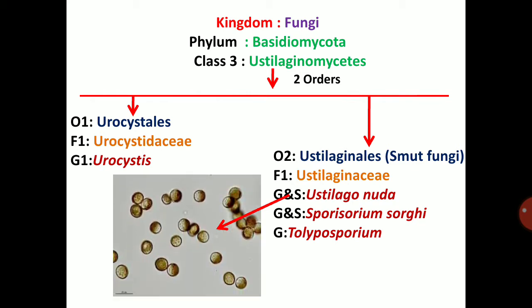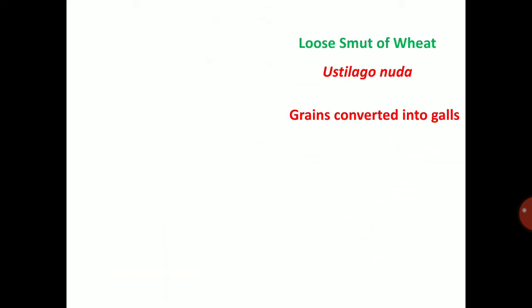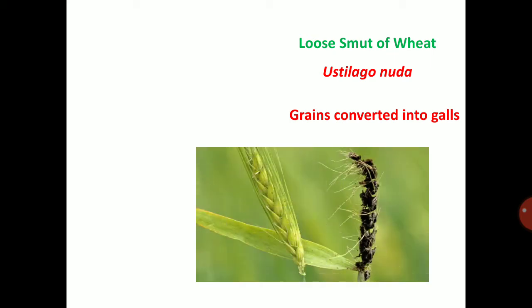These are teliospores — teliospores or chlamydospores of smut fungi. Smut fungi spores are called chlamydospores or teliospores. So what is meant by smut? Smut is nothing but black color balls, or the conversion of grains into black color balls, which is called as smut.